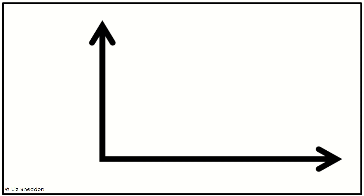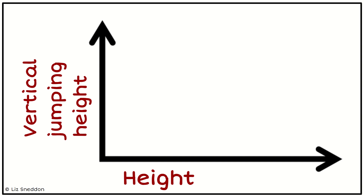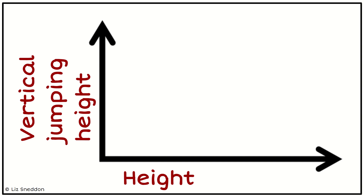I need to work out which variable goes on which axis. I ask myself: if I know their height, would that help me predict how tall they can jump? Or would knowing how tall they jump help me predict their height? What we find is we're going to put height on the explanatory axis, because knowing their height will help us predict how far they can jump vertically.